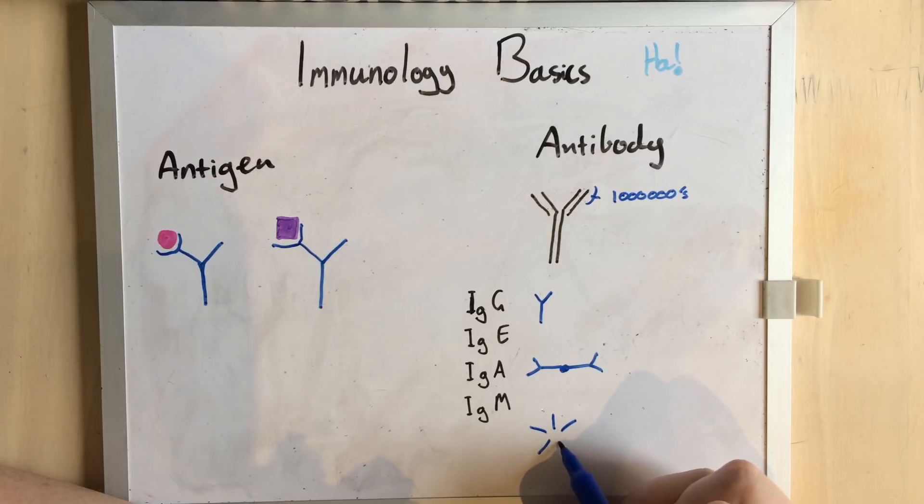And IgM is a great big molecule which has five different antibodies coming off it, which binds to pathogens and clumps to just pull them out of circulation.